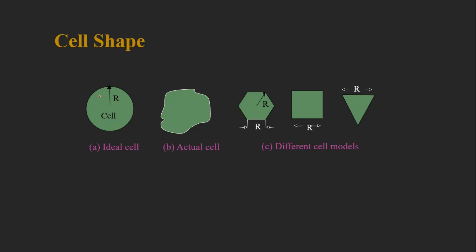Since a cell is a geographical area, it must have a shape. Ideally, a cell could be circular, hexagonal, square, or triangular — multiple shapes are possible. In reality, the cell shape depends on the traffic in that area, but theoretically we must choose one shape for mathematical analysis, so let's identify which cell shape is best.